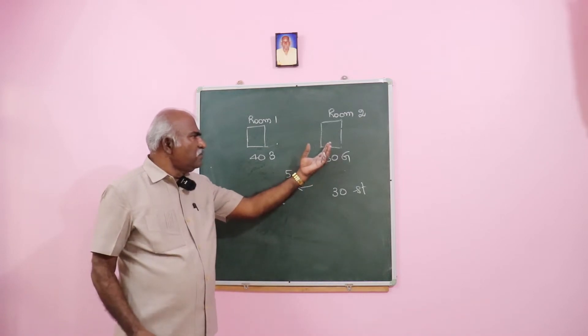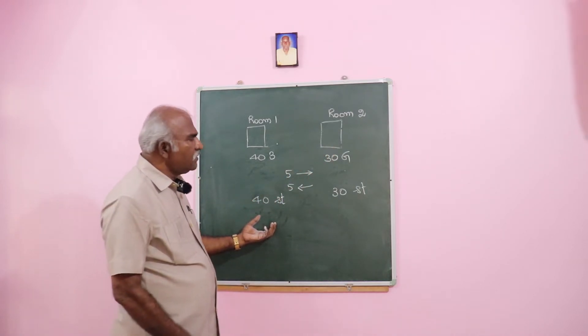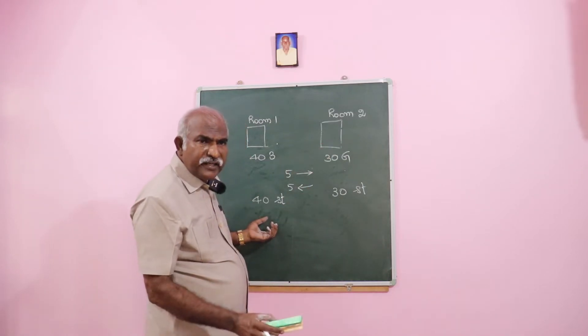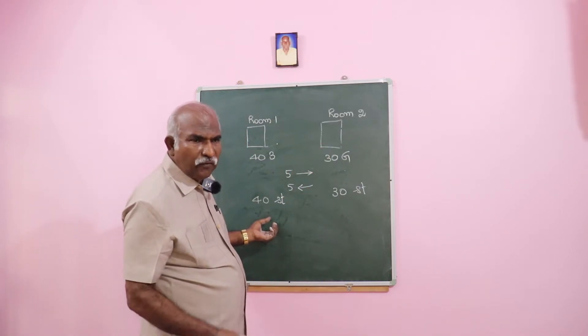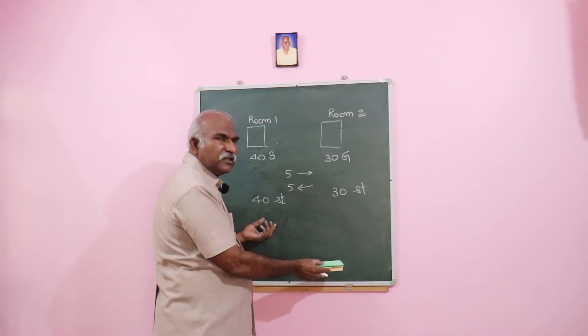Say some girls have come to room one. Has the strength decreased or increased there? No. It remains 30 in the beginning. It remains 30 in the end.